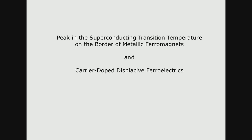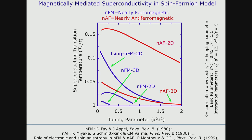The second problem I want to discuss is also connected with a peak — in this case, a peak of the superconducting transition temperature as a function of proximity to the quantum critical point. In the case of magnetic quantum critical points, there are many theoretical studies suggesting that the superconducting ordering temperature arising from the exchange of spin fluctuations — paramagnons or anti-paramagnons — tends to rise as one approaches the magnetic quantum critical point, and there are now many experimental examples of this phenomenon.